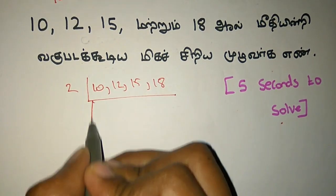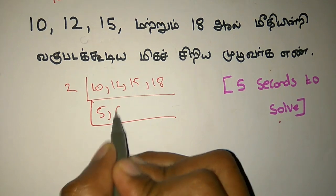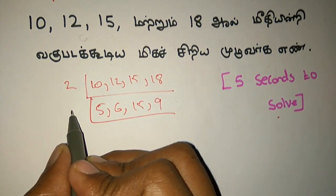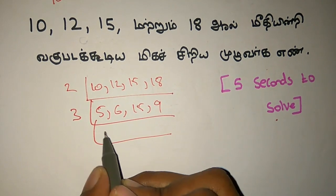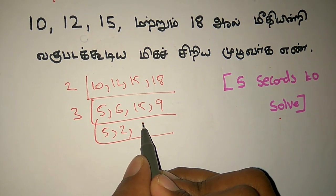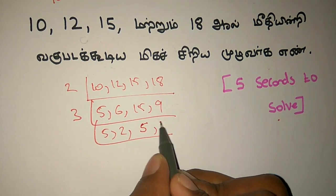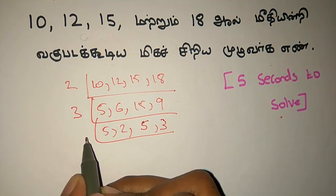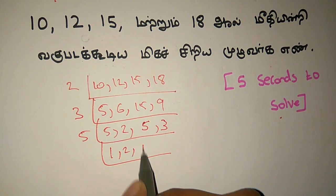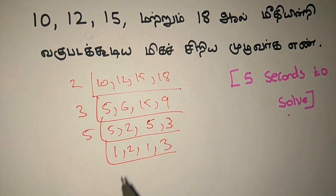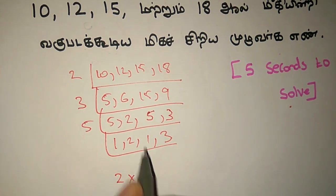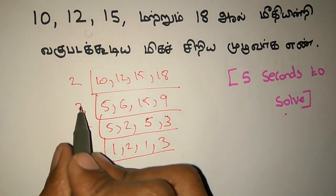So first 2. 5, 6, 15, 19. If we do 3. 5, 2, 5, 3. If we do 5: 1, 2, 1, 3. So 2, 2, 2, 3, 3.